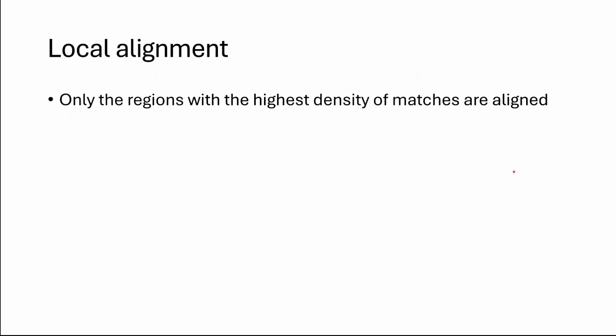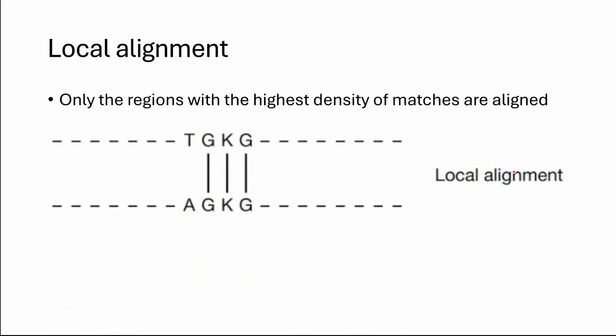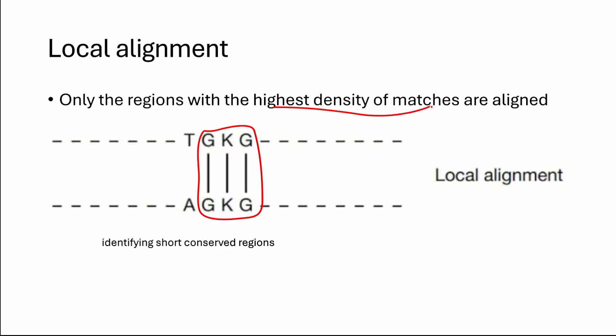In contrast, in local alignment, instead of aligning the entire length of the sequence, only the regions with the highest density of matches are aligned. This is useful for identifying short conserved regions in proteins or nucleic acid sequences. So we align only the most conserved region while the rest of the sequence is ignored in local alignment.